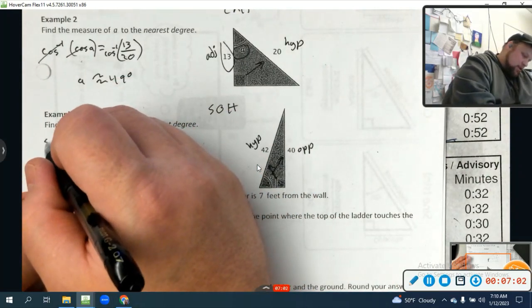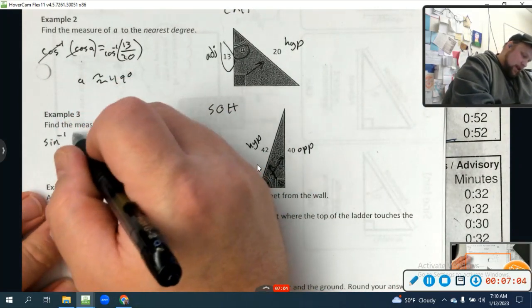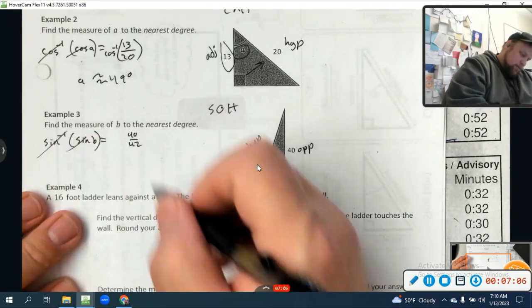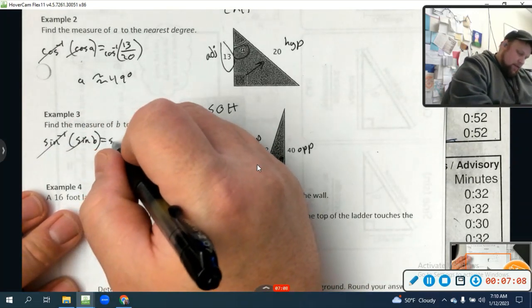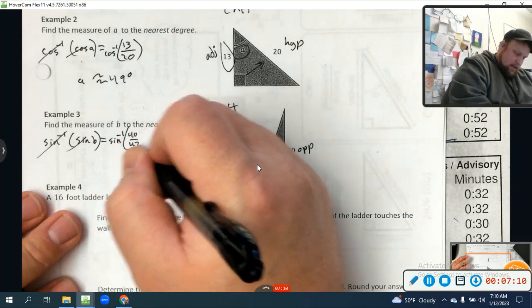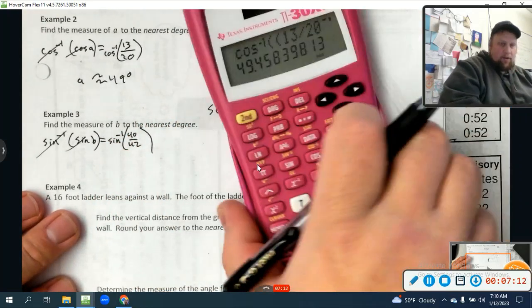And again, I know that the inverse sine is going to cancel this out, right? Boom, boom. Those cancel out. And I have to do the same thing to both sides. So we need the inverse sine of 40 over 42.